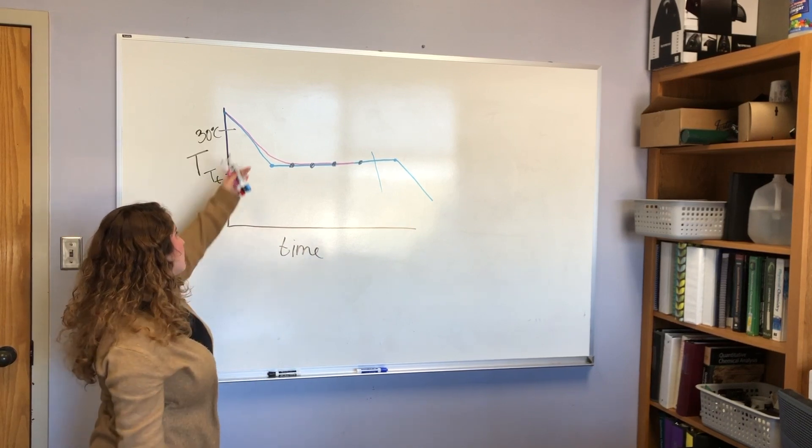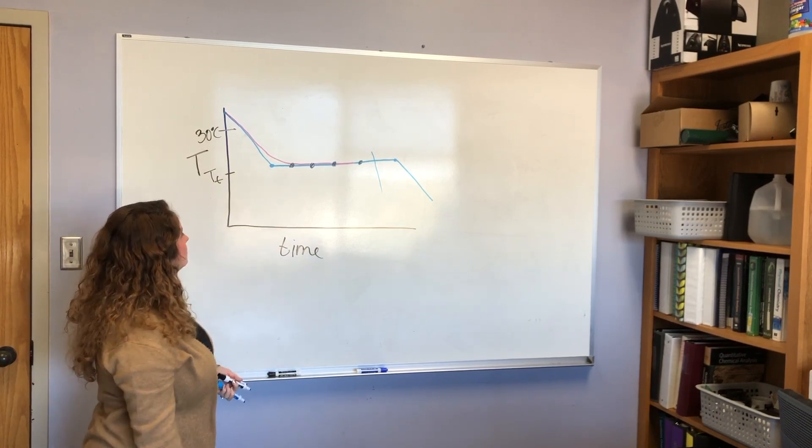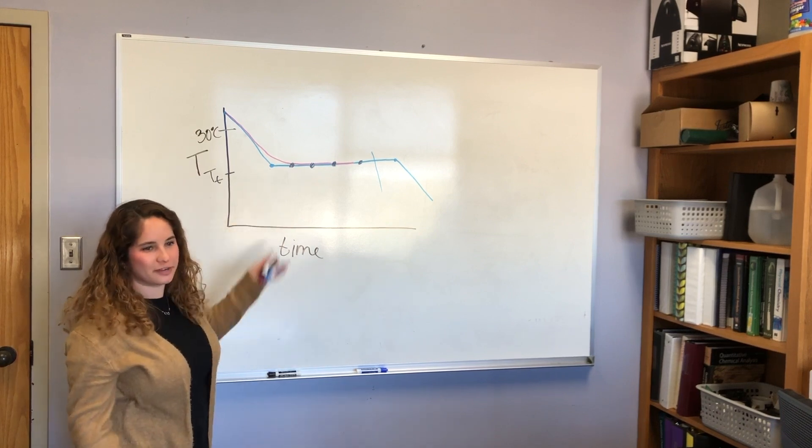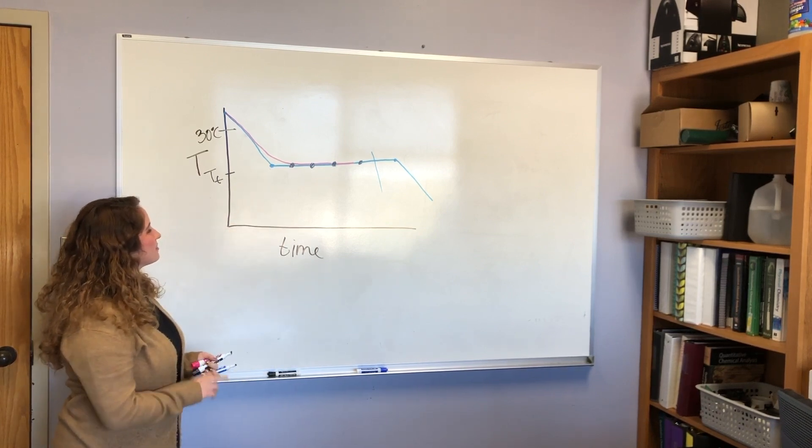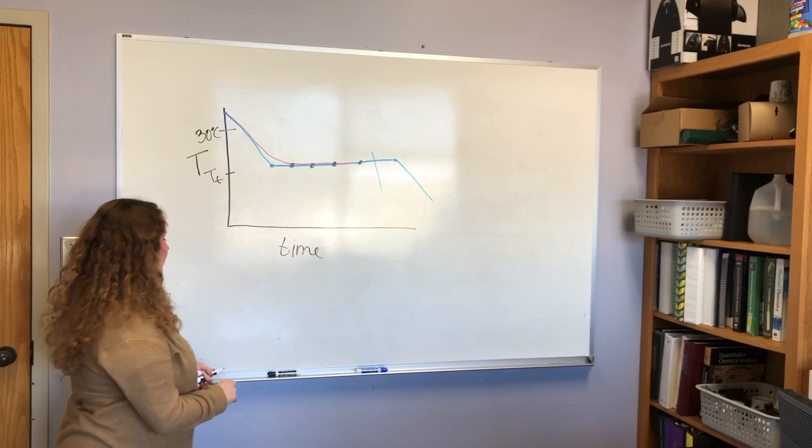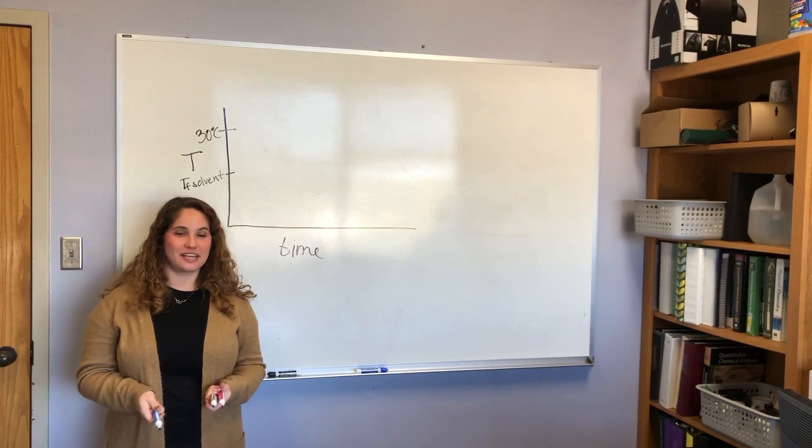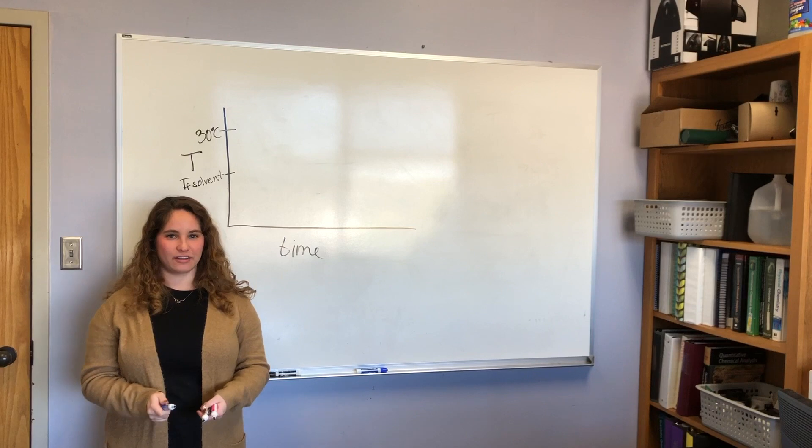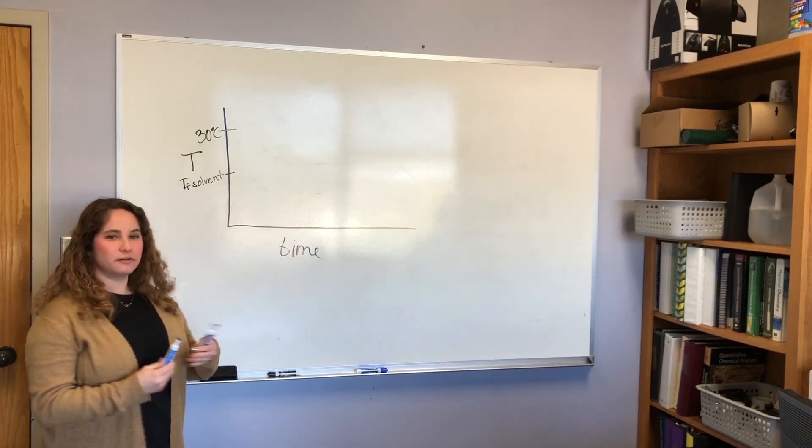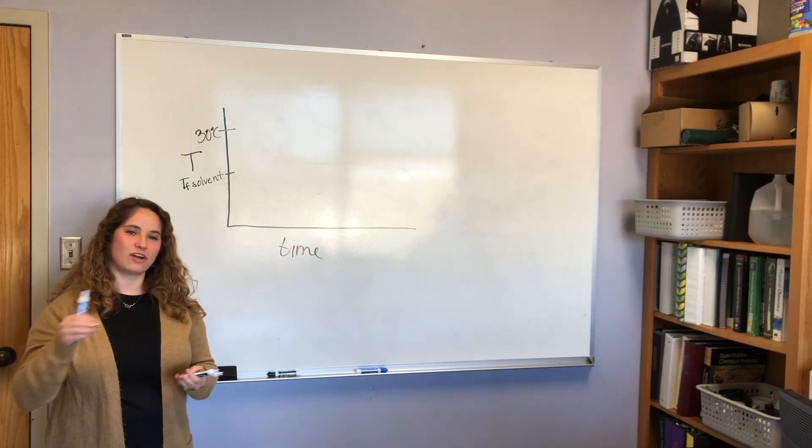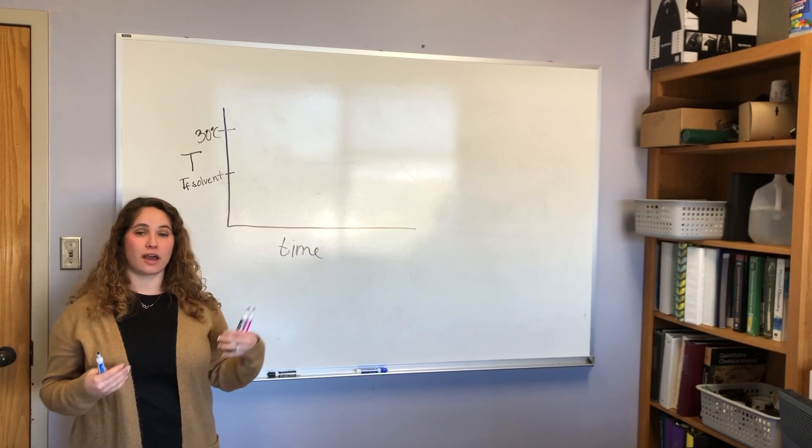For cyclohexane, this isn't really a big deal because any one of these points along this line is going to have the same temperature reading. And that's going to be the freezing point of your solvent. So it's not really a big deal if you have a curve on your solvent, but you will. So it's not a perfect world. So that's what you're going to see with the cyclohexane.